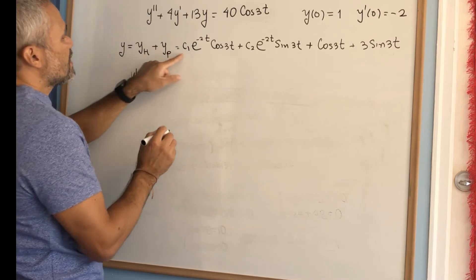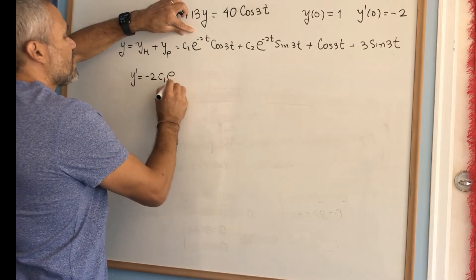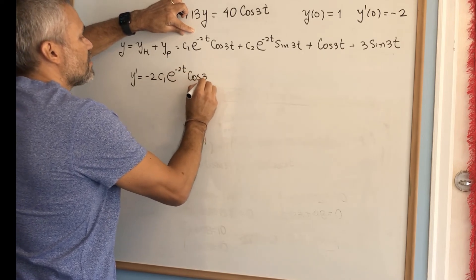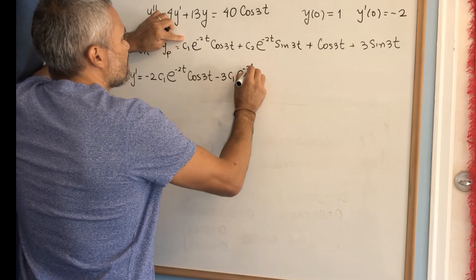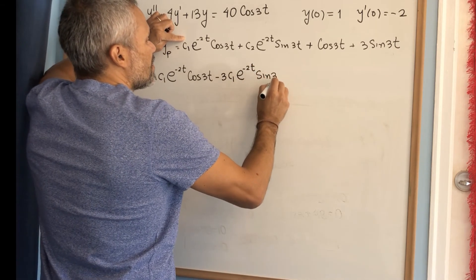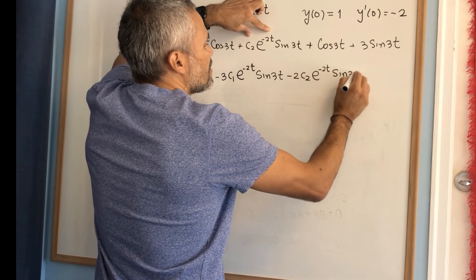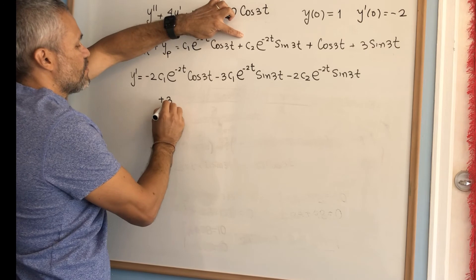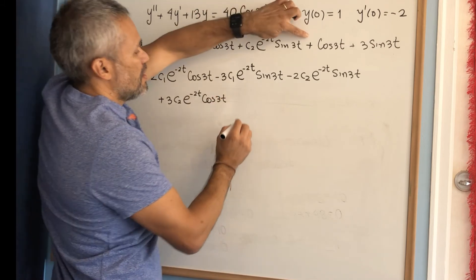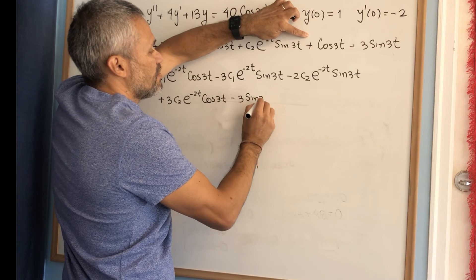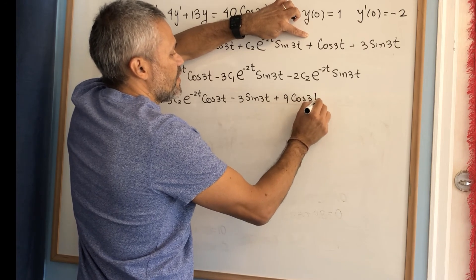The derivative of the general solution, using the product rule, is: −2c1·e^(−2t)·cos(3t) − 3c1·e^(−2t)·sin(3t) − 2c2·e^(−2t)·sin(3t) + 3c2·e^(−2t)·cos(3t) − 3·sin(3t) + 9·cos(3t).